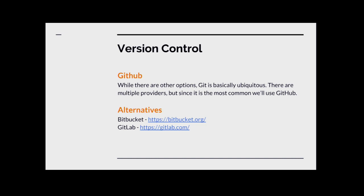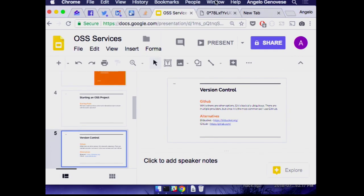For open source projects, GitHub is almost invariably the default choice for a hosting provider. If you have a problem with that, there's Bitbucket and GitLab. We actually use Bitbucket for our corporate code. They each have some interesting pricing options, but they all have an option which is completely free for open source projects — the requirement being that your code is public.